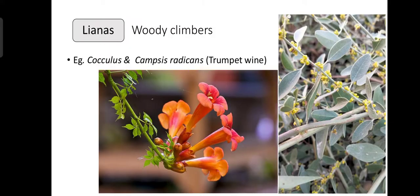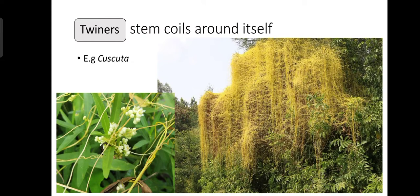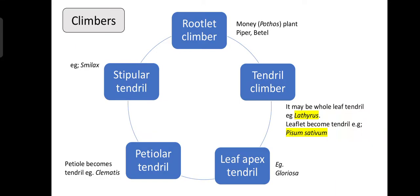Lianas are woody climbers. Examples include Cocculus and Campsis radicans, which is commonly known as trumpet vine. Twiners are climbers which climb by wrapping themselves around the stem of a host plant. The example of a twiner is Cuscuta.